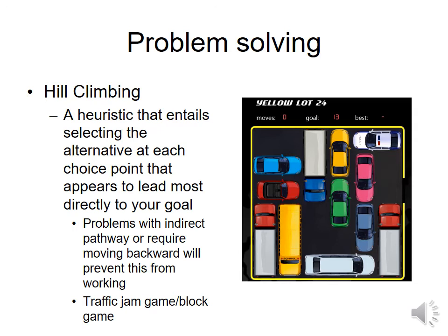Hill climbing is a heuristic where a choice pushes you to another choice — instead of going directly up the hill, you zigzag. It requires moving forwards and backwards. The traffic jam puzzle is a great example: to get the red convertible out of the lot, you can't move it until you move the tractor trailer and other cars, and you can't move those until you move the white limousine, which requires moving the red truck first. Each decision leads to the next decision, but eventually you get the red convertible out.